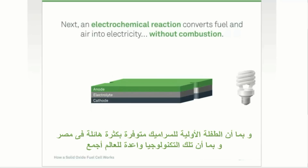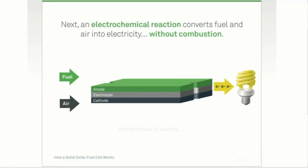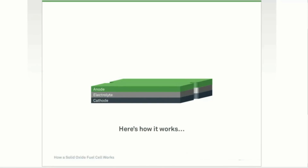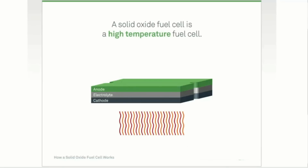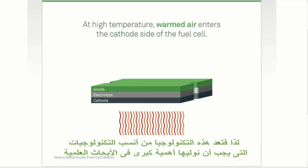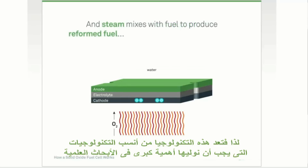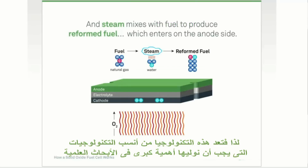An electrochemical reaction converts fuel and air into electricity without combustion. A solid oxide fuel cell is a high temperature fuel cell. At high temperature, warmed air enters the cathode side of the fuel cell and steam mixes with fuel to produce reformed fuel, which enters on the anode side.